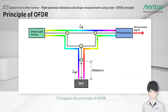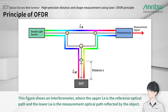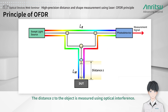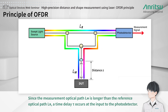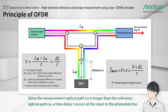This figure shows an interferometer where the upper path LR is the reference optical path and the lower path LM is the measurement optical path reflected by the object. The distance Z to the object is measured using optical interference. Since the measurement optical path LM is longer than the reference optical path LR, a time delay tau occurs at the input to the photodetector.